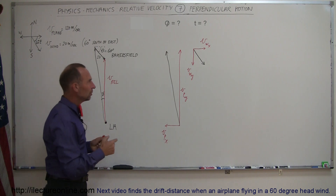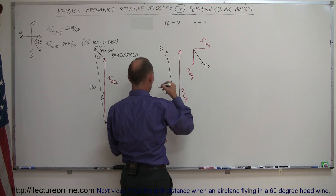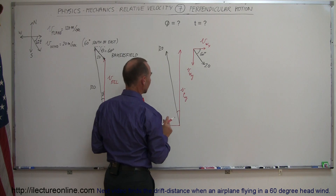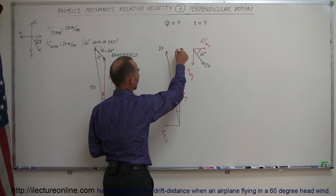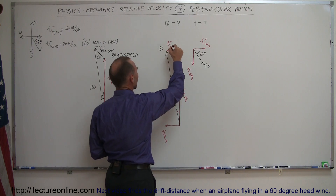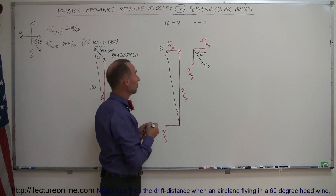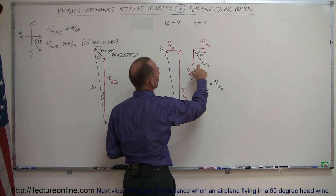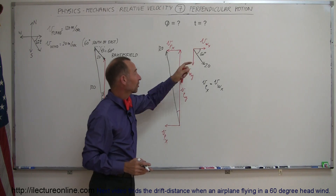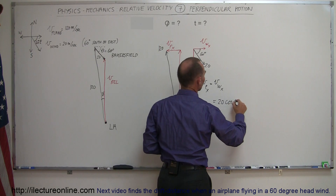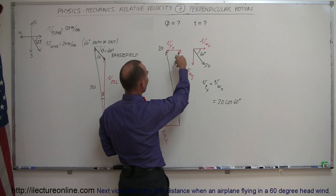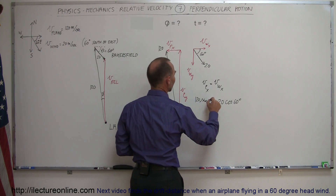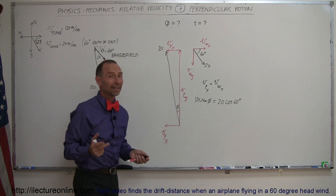Since we know the wind vector is 20 m/s, the plane is 120 m/s, and the wind angle is 60 degrees, we can set up the equation. The velocity of the plane in the x-direction equals the velocity of the wind in the x-direction. The wind's x-component is 20 times cosine of 60 degrees — the adjacent side to the angle. The plane's x-component is 120 times sine of phi — the opposite side to angle phi.